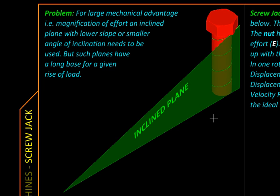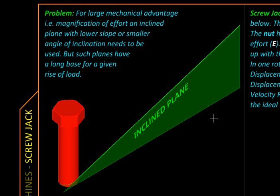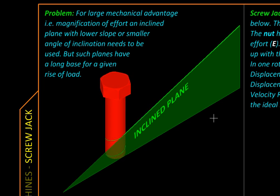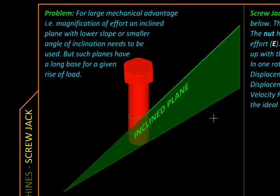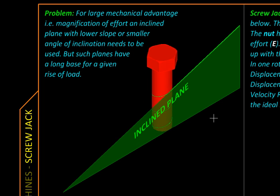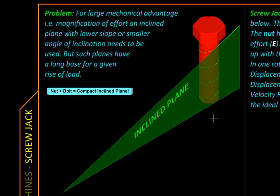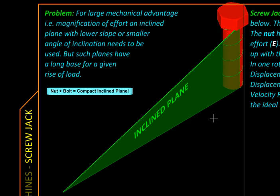And this is nothing but a thread that we usually see on threaded fasteners like nuts and bolts. So a nut and bolt pair can be used as a substitute, a more compact substitute for an inclined plane, and therefore it can also act like a simple machine.